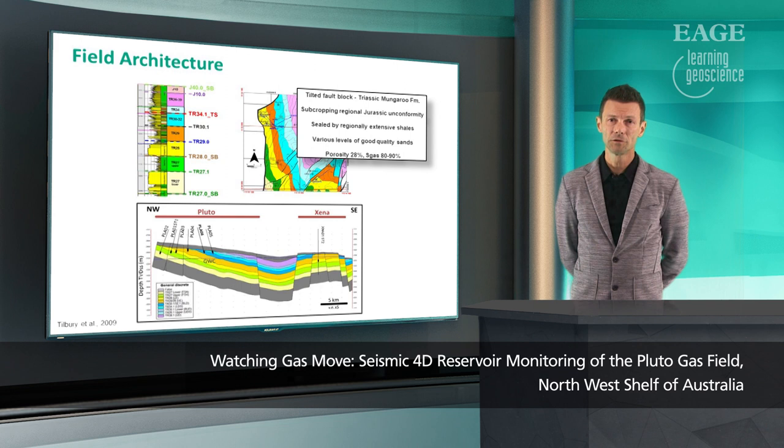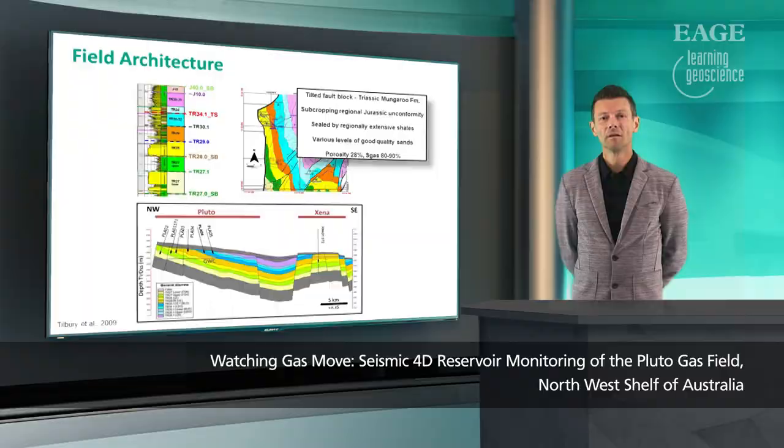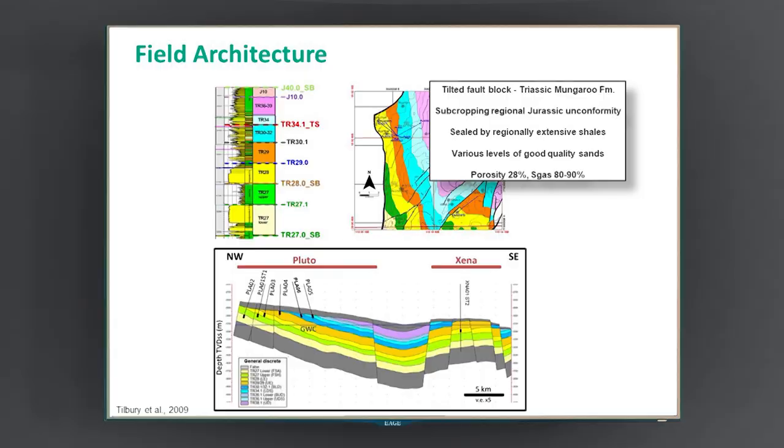The architecture of the field is primarily a large tilted fault block of the Triassic-Manguru Formation. This block is a subcrop in a regional unconformity, which is consisted of a laterally extensive regional shale. The field is consisted by various levels of good quality sands, with porosity in the range of 28%, and saturations varying from 80% to 90%.